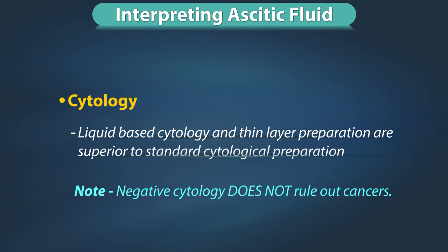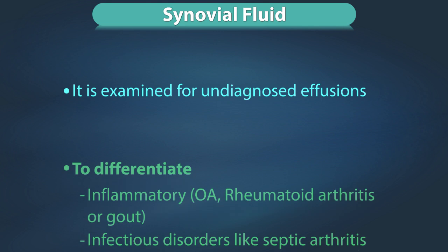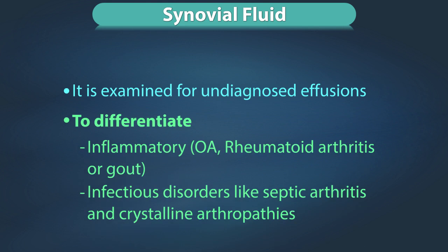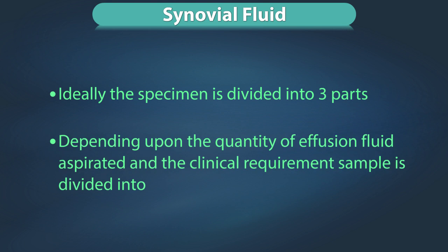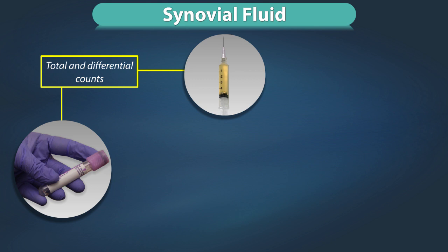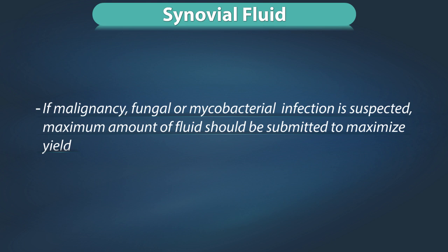Synovial fluid is the fluid in joints and is an imperfect ultrafiltrate of plasma combined with hyaluronic acid produced by synovial cells. It is examined for undiagnosed effusions, to differentiate between inflammatory and infectious disorders like septic arthritis, and for crystalline arthropathies like gout. Ideally the specimen is divided into three parts: an EDTA tube for total and differential counts, a blood culture bottle for aerobic and anaerobic cultures, and heparinized tubes for biochemistry and cytology. If malignancy, fungal, or mycobacterial infection is suspected, maximum amount of fluid should be submitted to maximize yield.